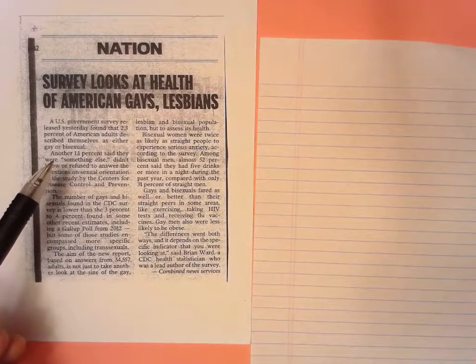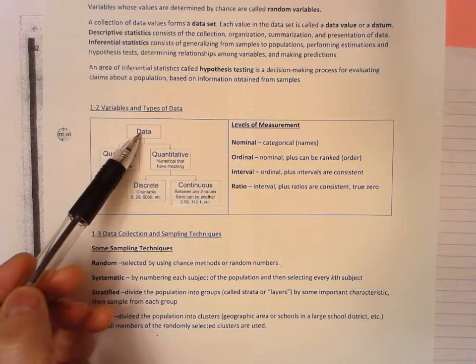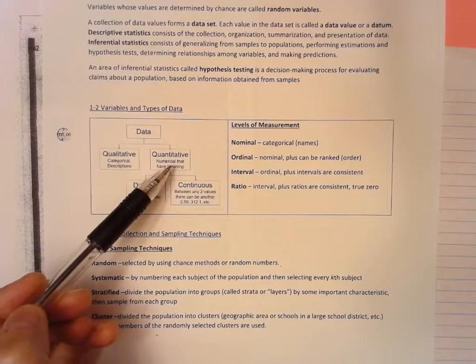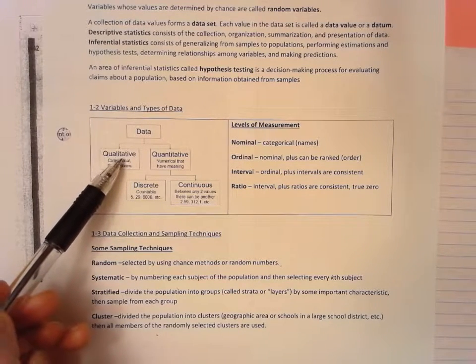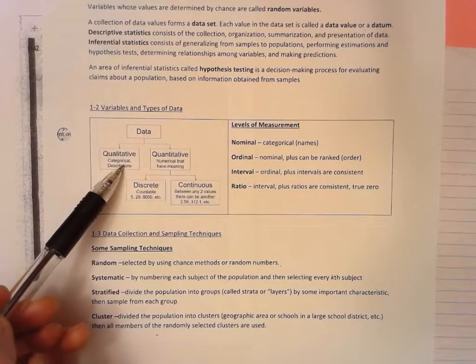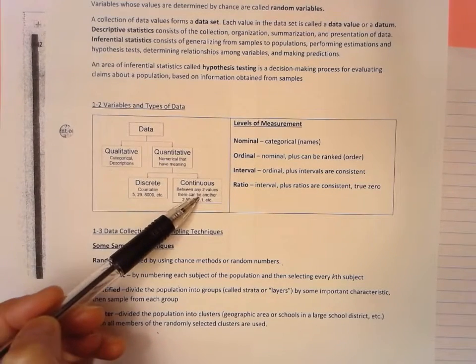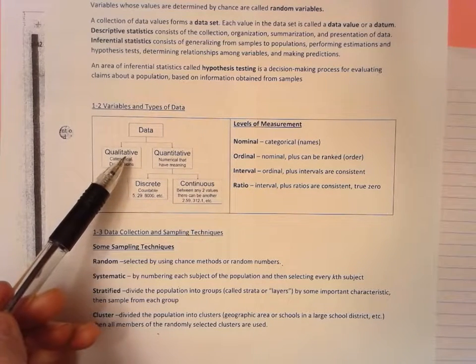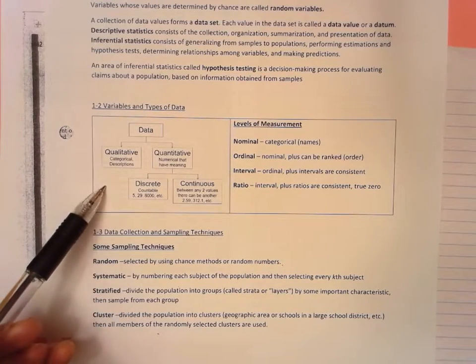So you got to ask yourself for this sexual orientation variable, what kind of variable is it? The data, what the data looks like will tell you whether it's qualitative or quantitative. The values take on descriptions or categorical descriptions. So this variable, sexual orientation is a qualitative variable. Now, if you look the way this is organized, only quantitative variables can be discrete or continuous. So if a variable is qualitative, it's neither discrete nor continuous.